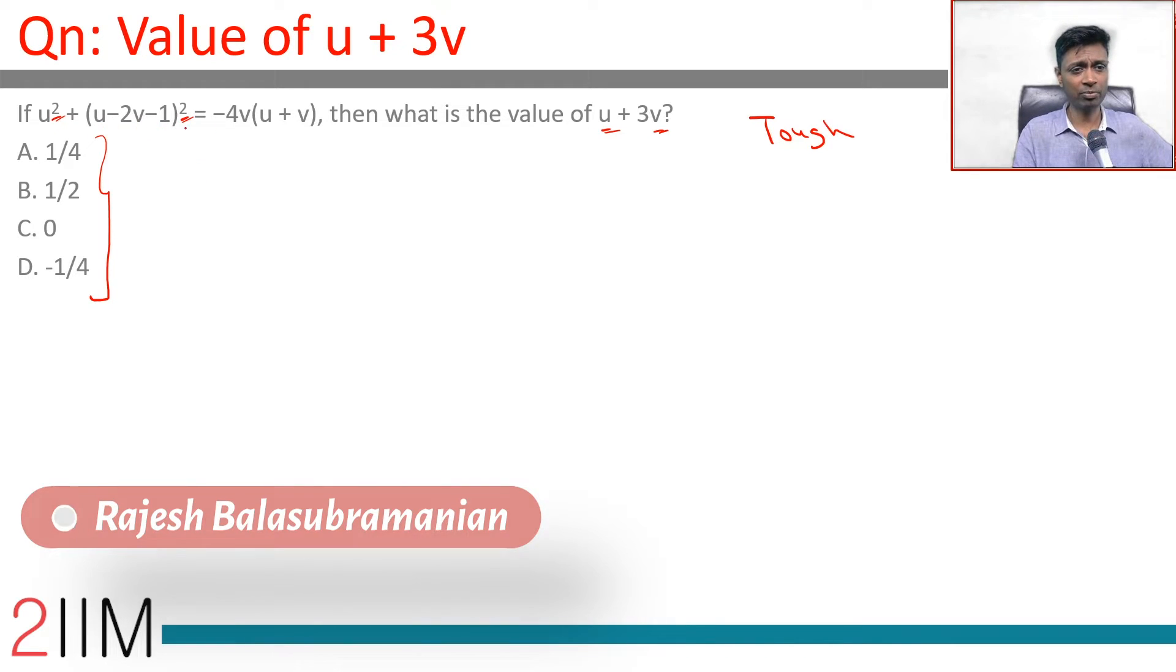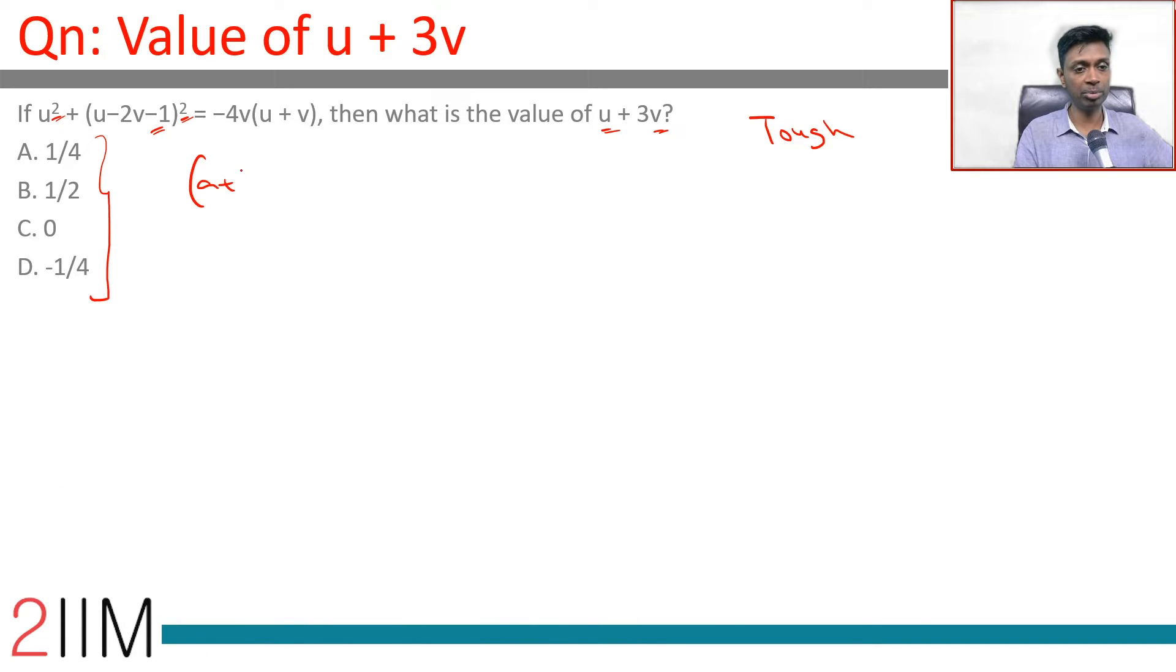First up let us expand this. a plus b plus c whole square is a square plus b square plus c square plus 2ab plus 2bc plus 2ca. If you did not know this also we could have just multiplied it and got to the answer. Let us plug this in.